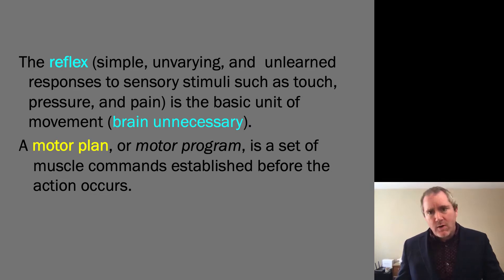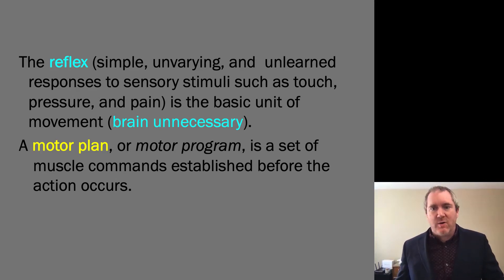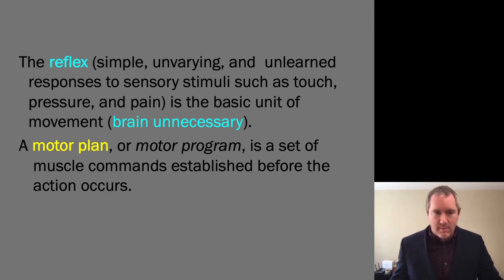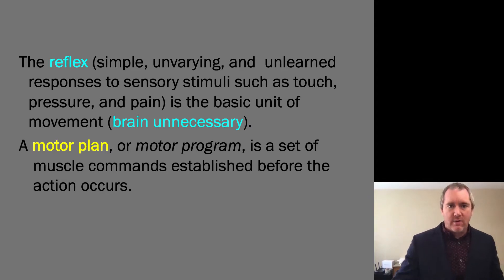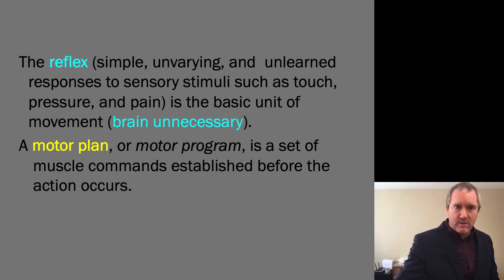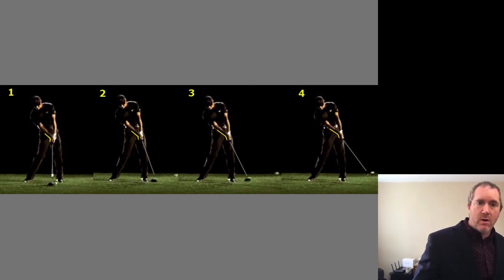A motor plan, by contrast, involves the brain — a motor program that would be a set of muscle commands established before an action occurs. A lot of this would be through training of the basal ganglia and possibly the cerebellum. Playing a musical instrument and golf are good examples of establishing a motor plan.